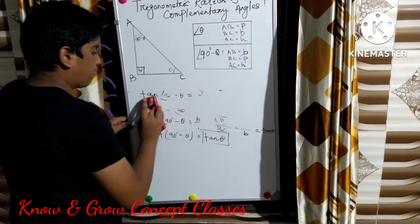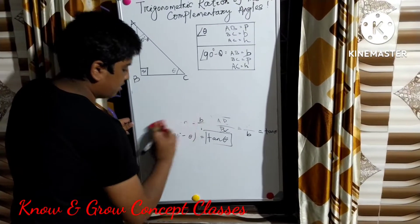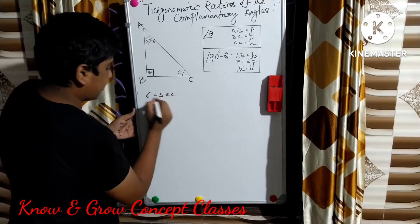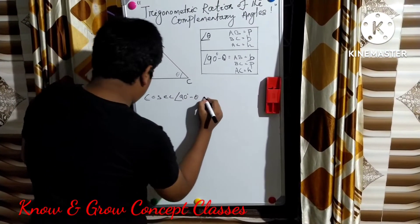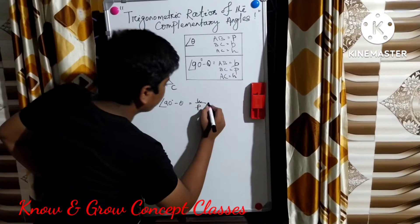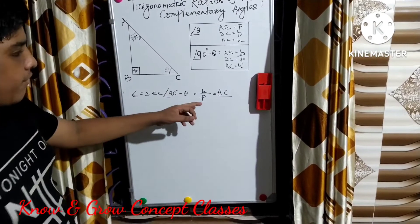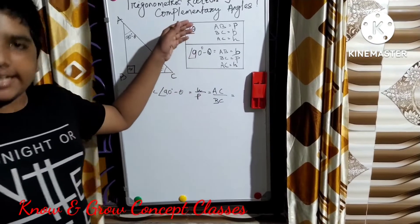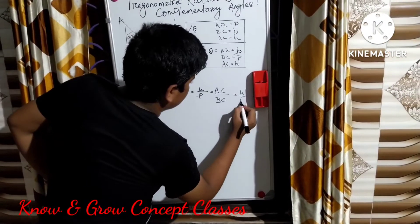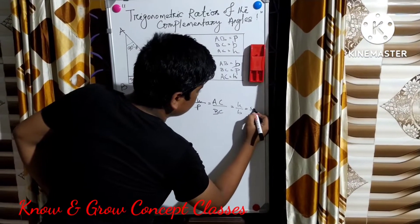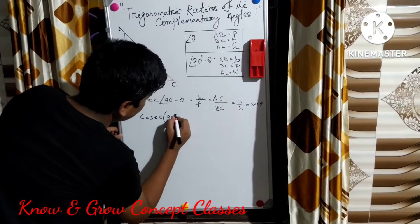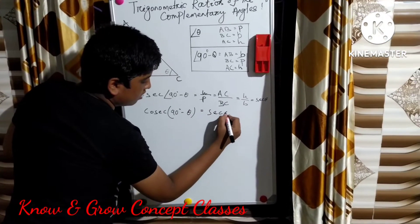Now let us find the ratio of cosec(90° - θ) and sec(90° - θ). Cosec(90° - θ) is equal to hypotenuse by perpendicular. Here the hypotenuse is AC and the perpendicular is BC. For angle theta, AC is the hypotenuse and BC is the base, which is the ratio of sec θ. So cosec(90° - θ) = sec θ.